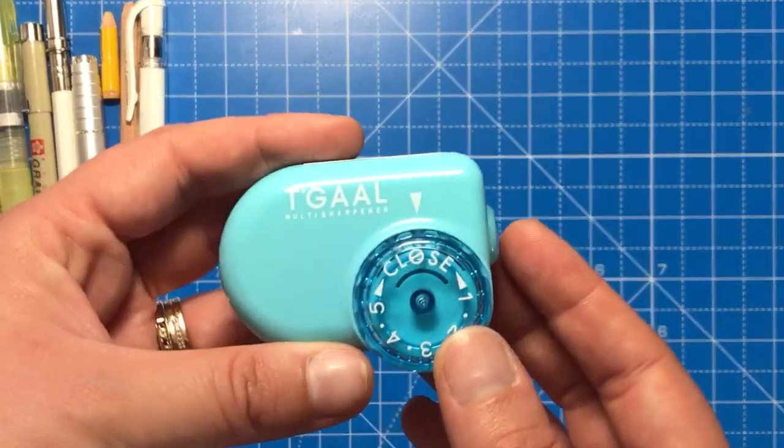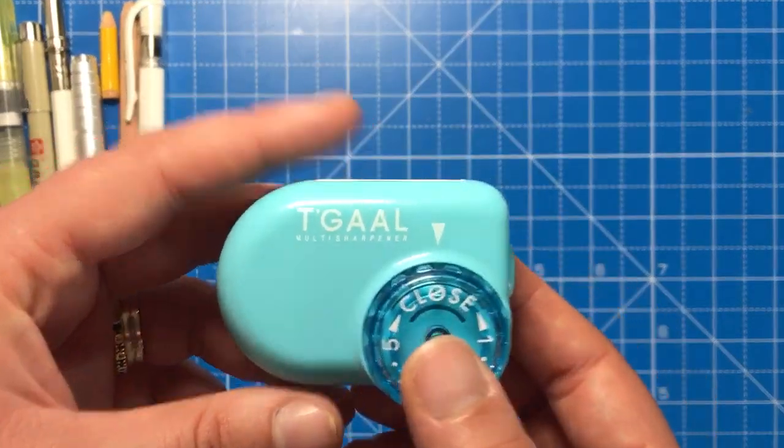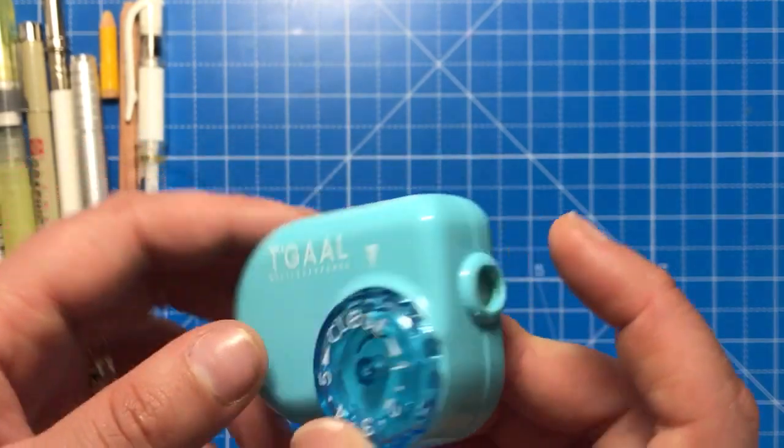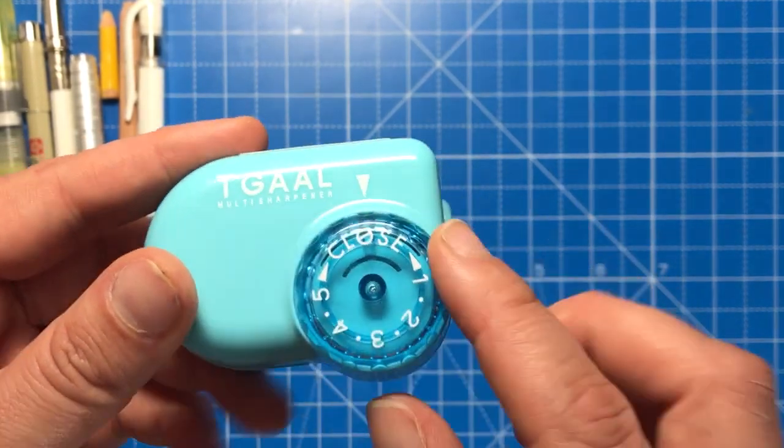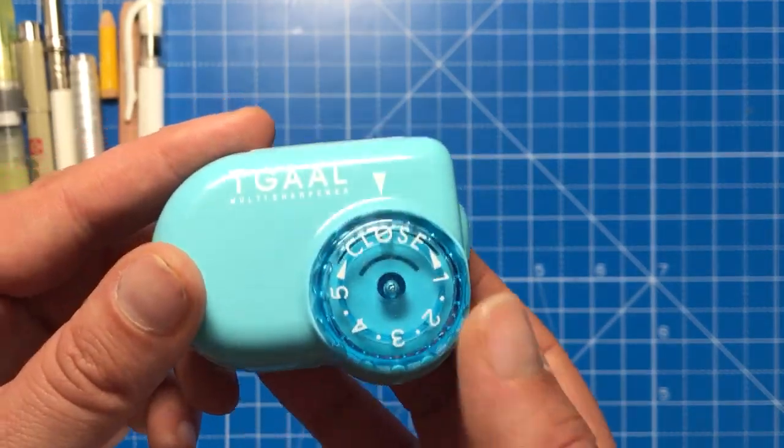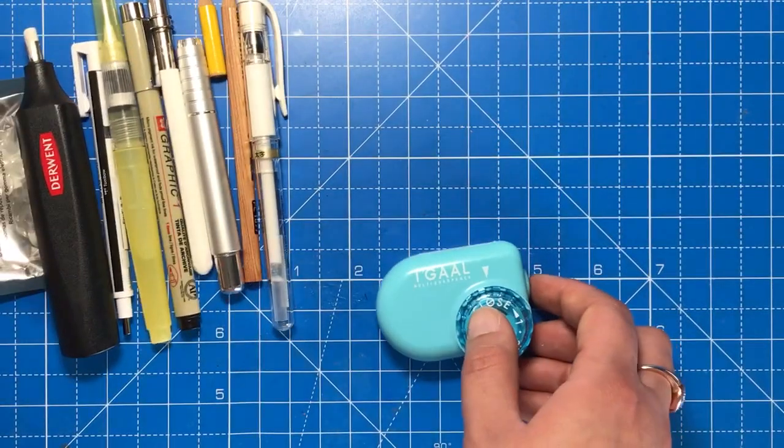The final item that I want to show you is my sharpener. This is a T-Gal made in Japan and it is a multi sharpener, so that means that you can sharpen your pencil to all different types of length depending on how hard or soft your pencil is.